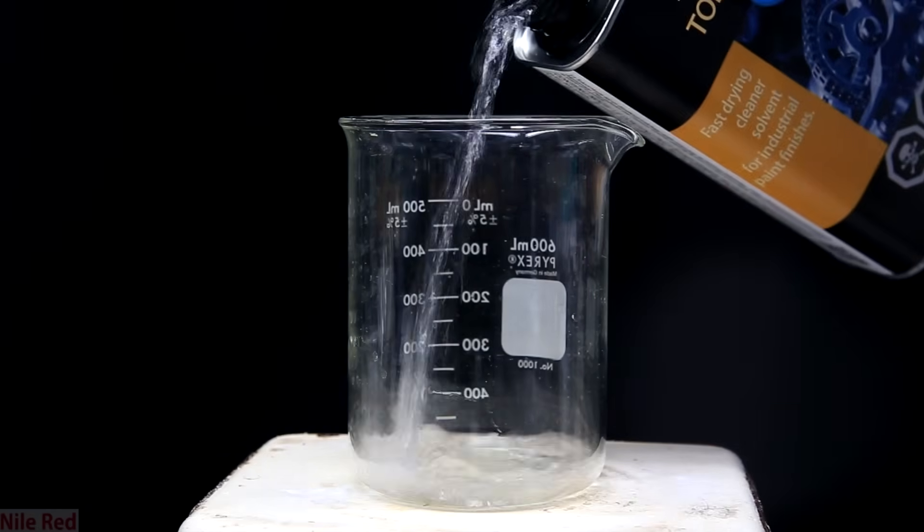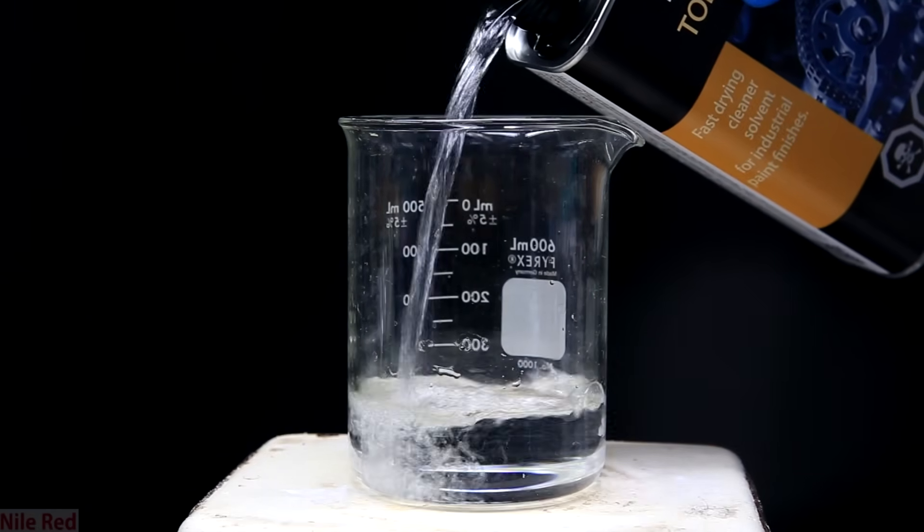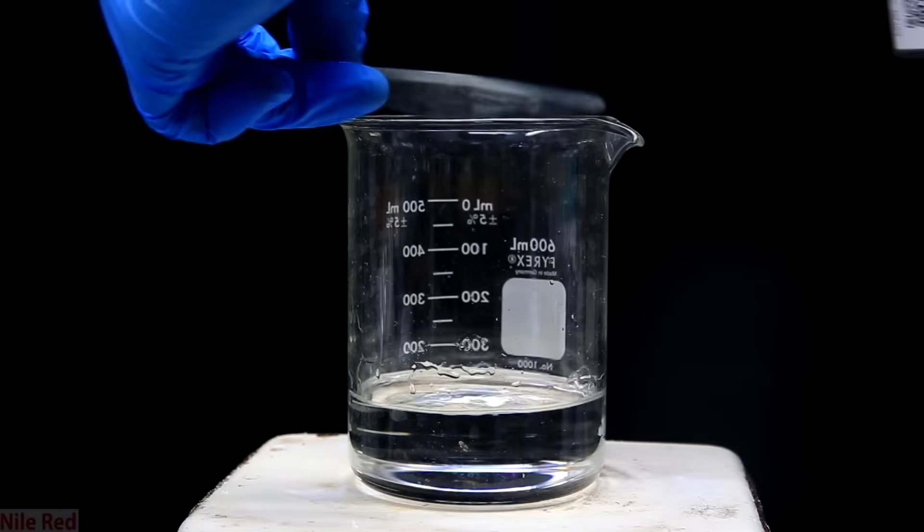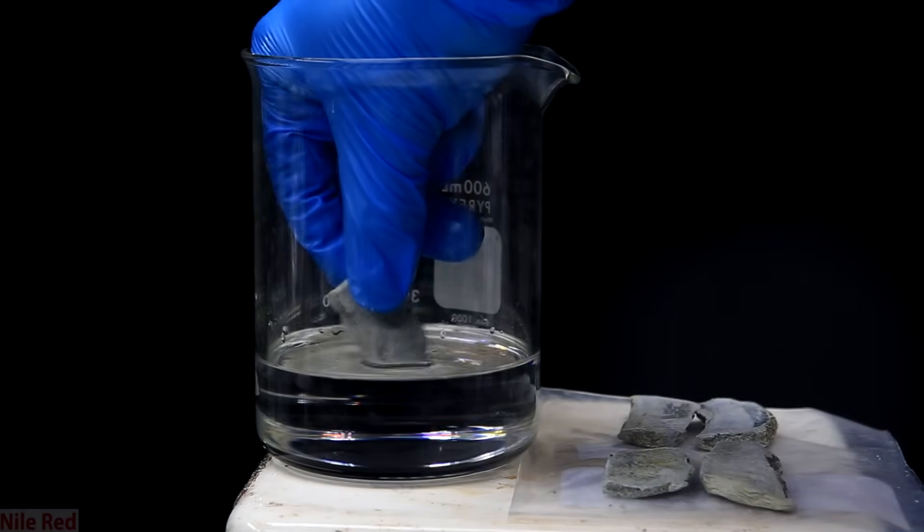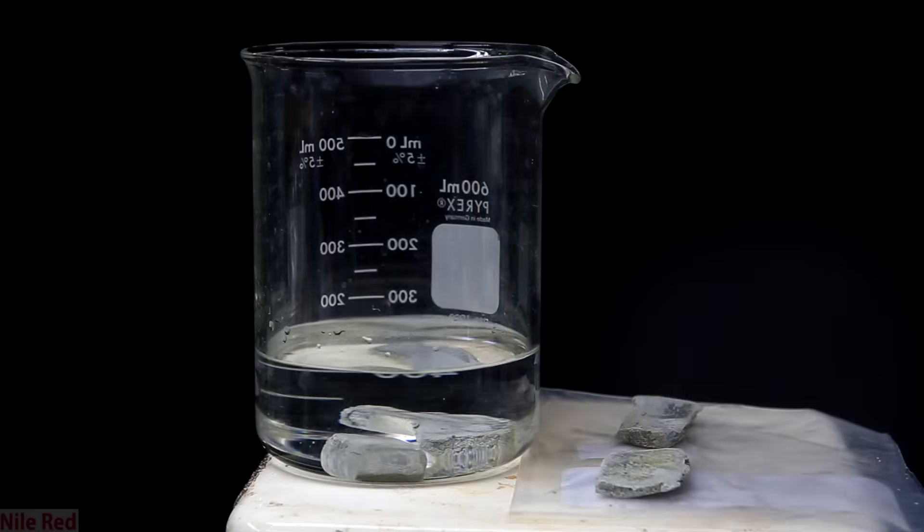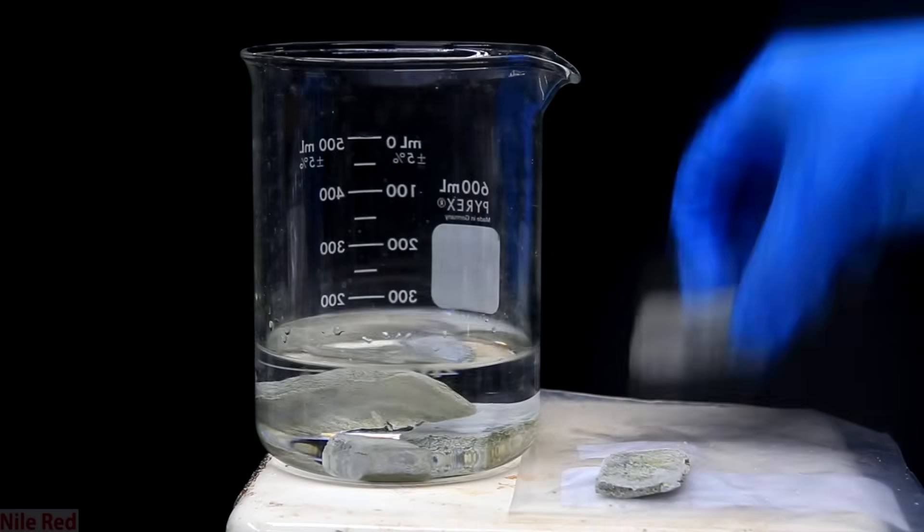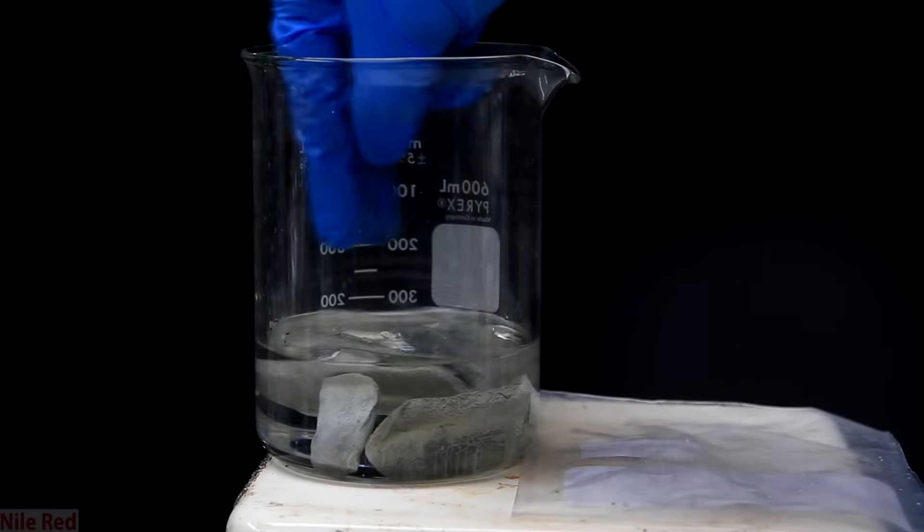The first thing I do is I fill a beaker with a little bit of toluene. Toluene doesn't react with alkali metals so it's a good solvent to use when cleaning them. With the toluene added we can start adding our potassium metal. You can see that when I place it in the flask there's no reaction that occurs, maybe just a little bit of bubbling as some of the potassium reacts with water that might be in the toluene.